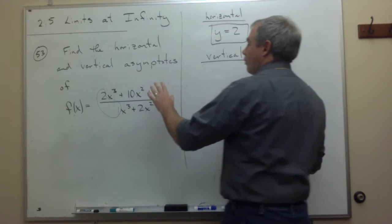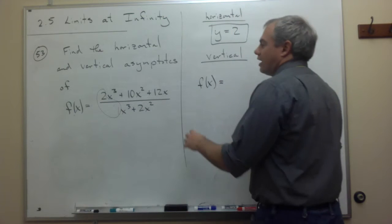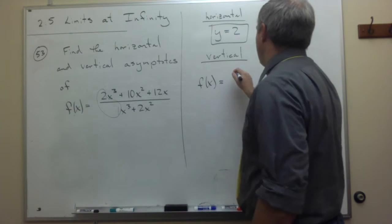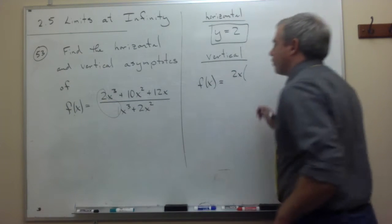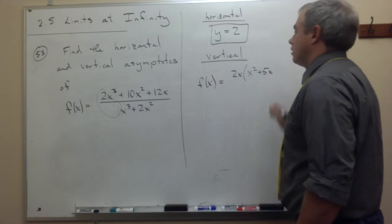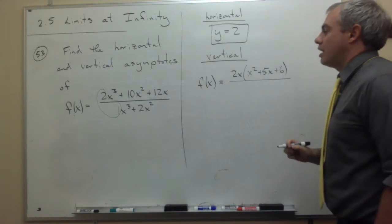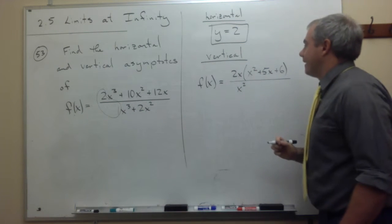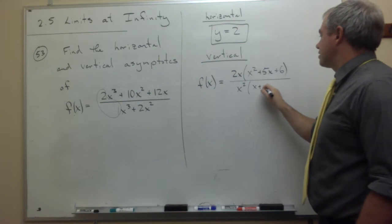So first of all, if I want to factor f of x, I see on the top everything has a factor of 2x, so let's just pull that out to start. So I have a 2x, plus 5x, and then that would leave me with an x squared, plus 5x, plus 6. And on the bottom, I can pull out an x squared, and that would leave me with an x plus 2.